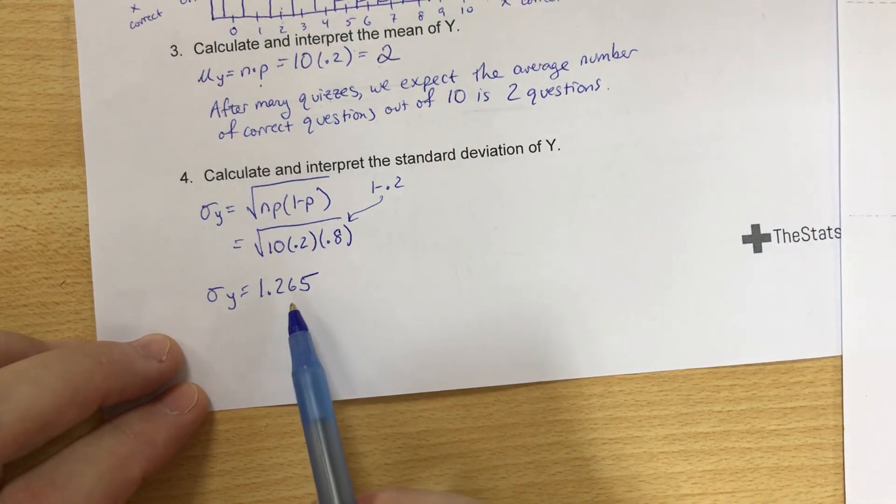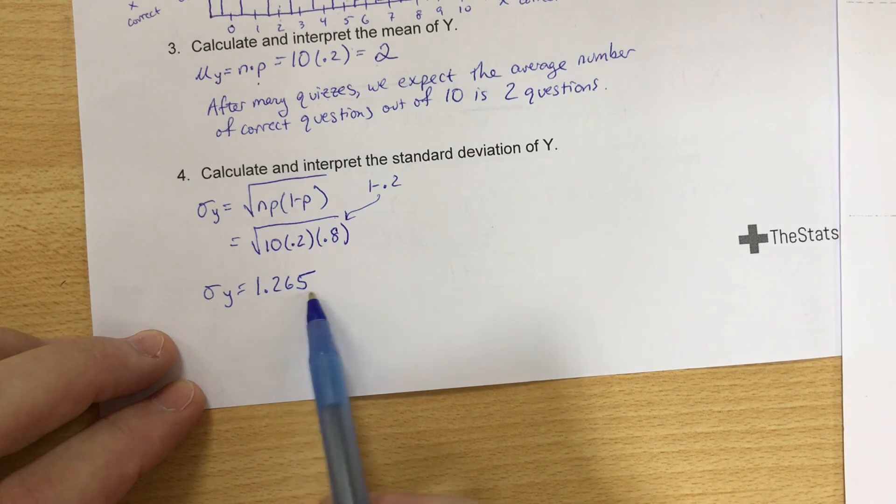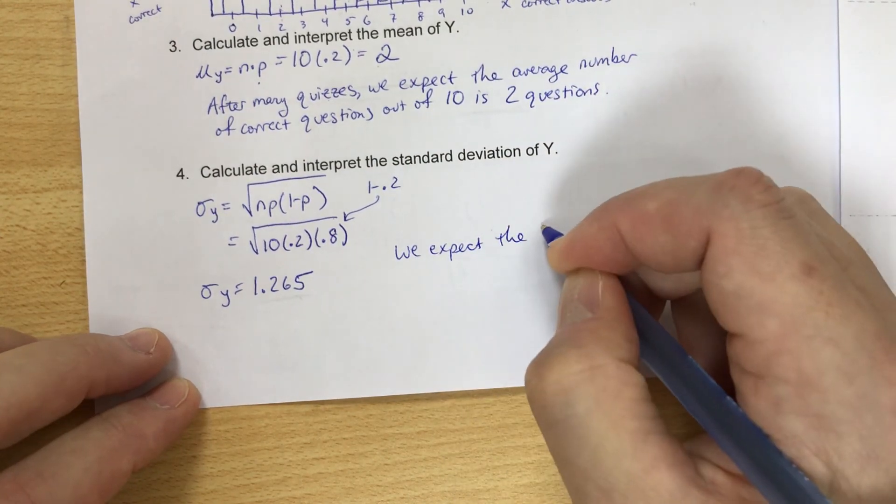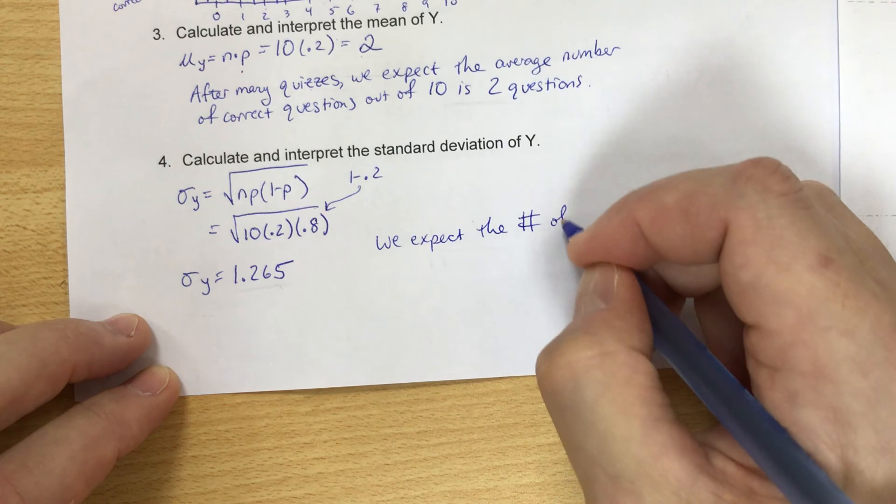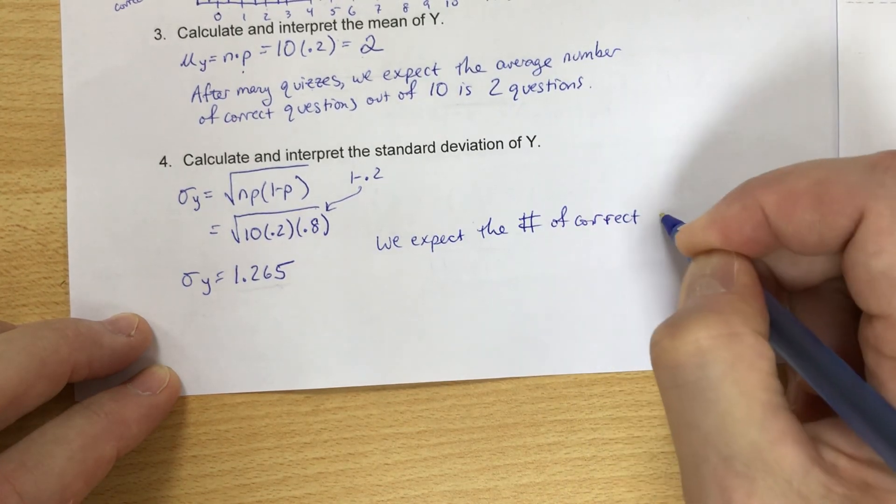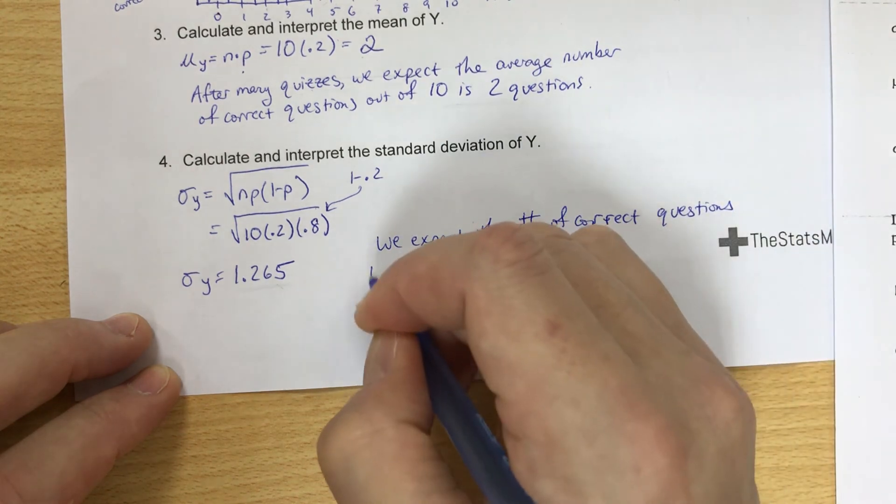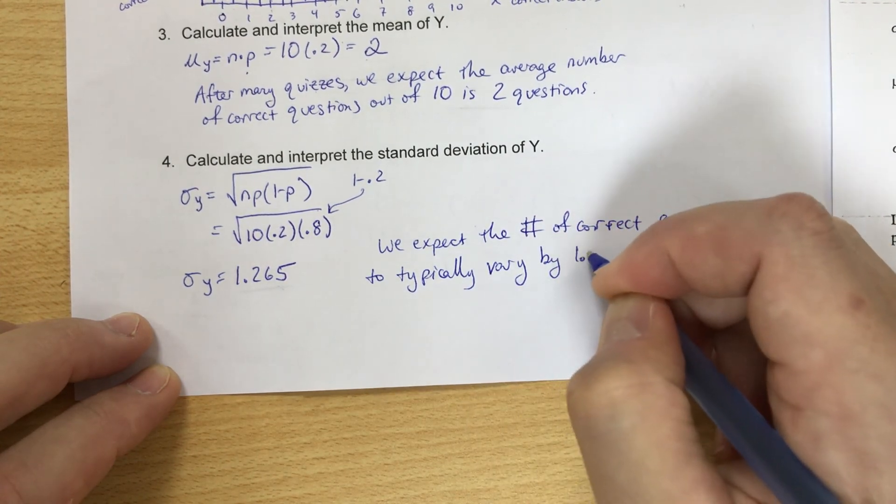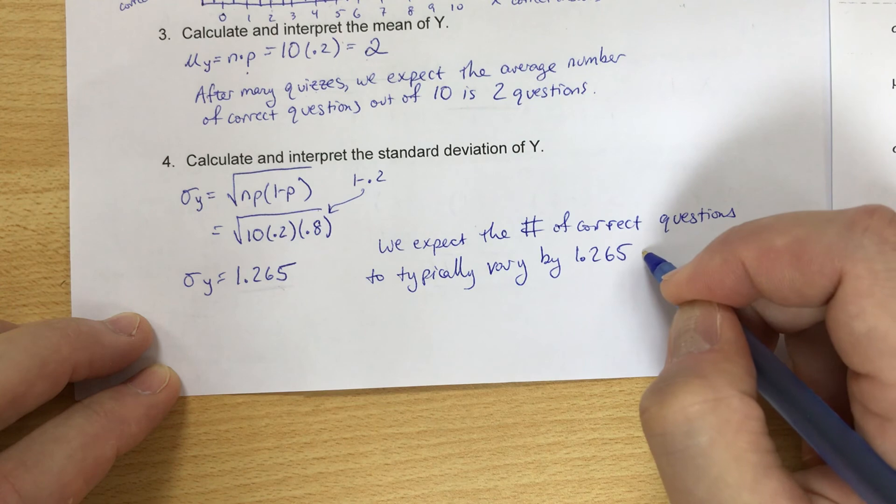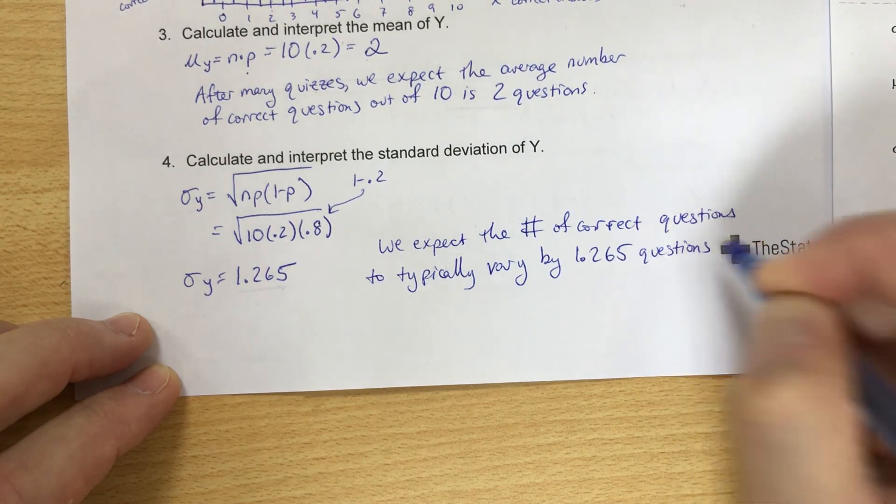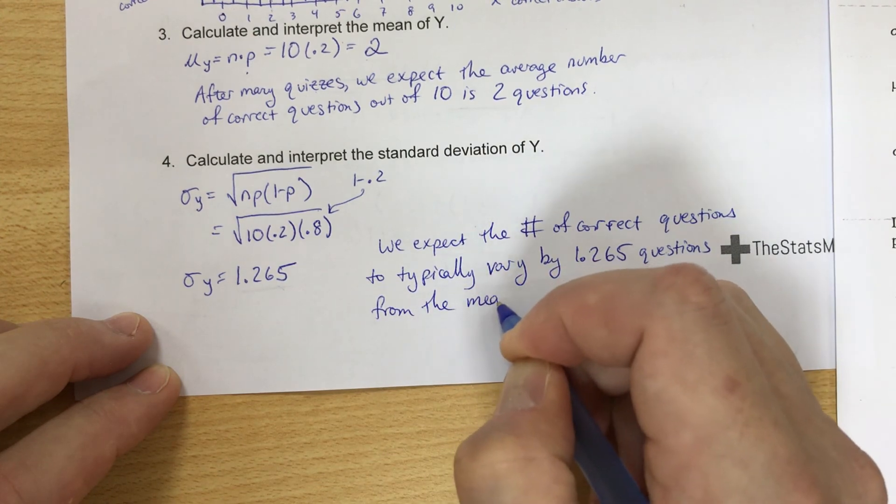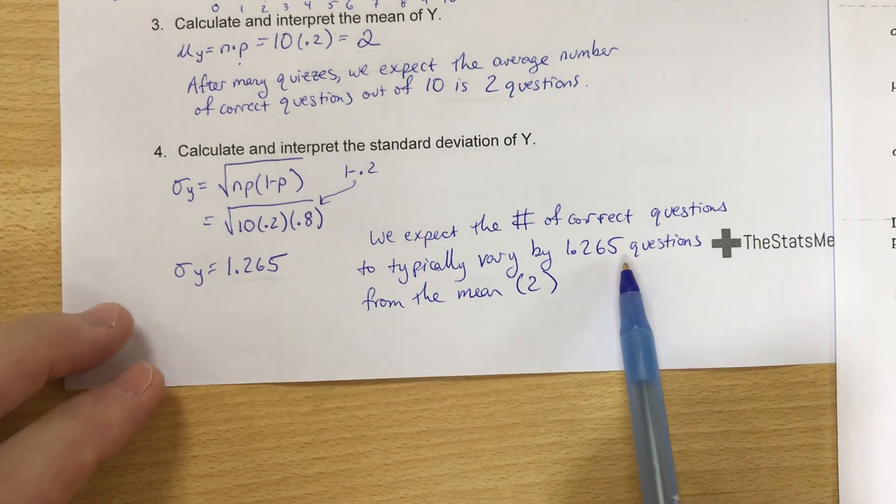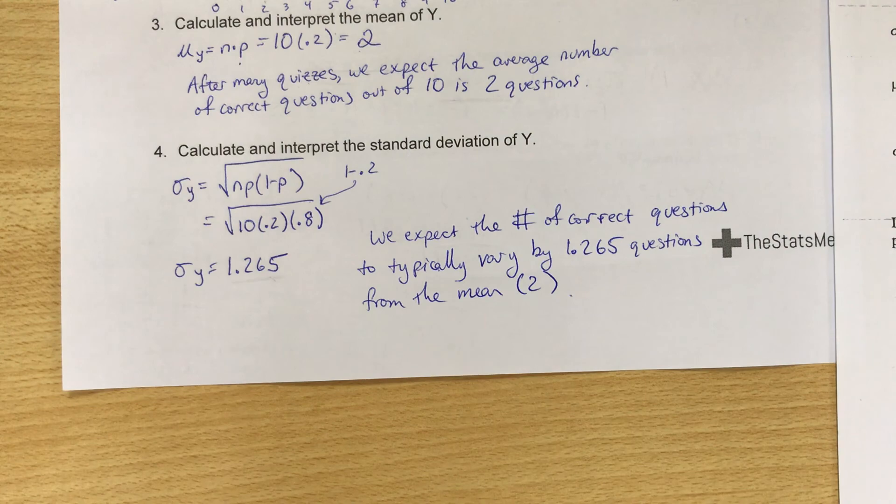So the standard deviation of Y is 1.265. Okay, so we would expect that the number of questions correct. So we expect the number of correct questions to typically vary by 1.265 questions from the mean, which is 2. We expect the number of correct questions to typically vary by 1.265 questions from the mean, which is 2. And that is the end of the notes.